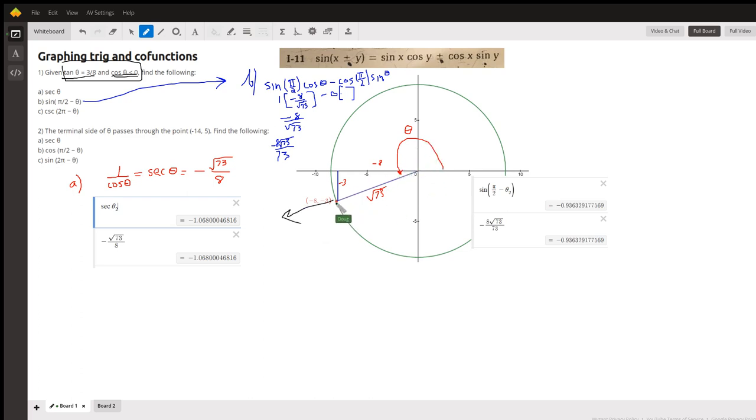And the coordinates of this point right here, if you want to set up a little right triangle, are negative eight, negative three. That's why the tangent of theta is opposite over adjacent, negative three over negative eight is indeed three eighths, and the cosine would be negative eight over radical seventy-three. So we're supposed to find these values given that information.